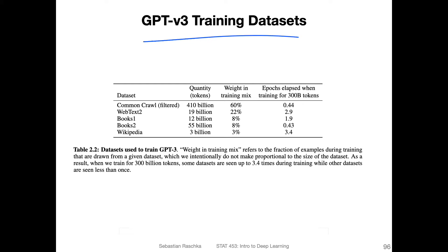The datasets are also substantially larger. In GPT version two they had the WebText dataset consisting of around 8 million documents. Now they have a version two of that with 19 billion tokens. They also have an even bigger dataset called Common Crawl for another 10 billion tokens, plus book datasets, and they still have the Wikipedia dataset.